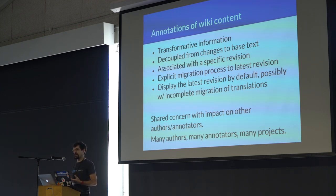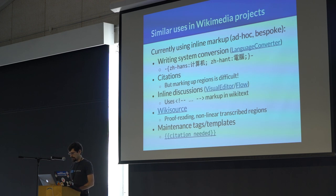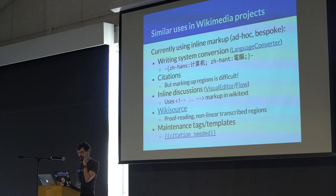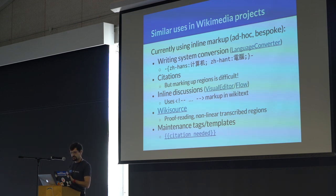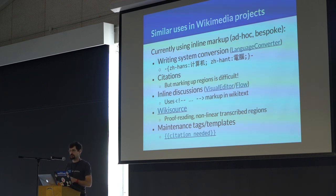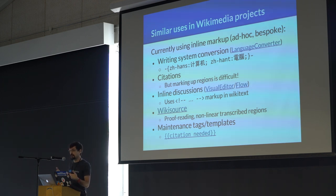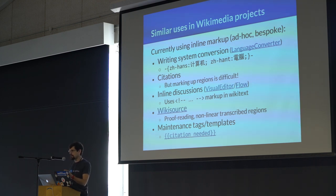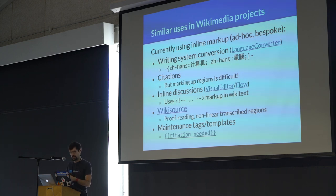There are also many different annotation projects — translation is just one instance. We have a system to convert between writing systems for certain Wikipedias, between Cyrillic and Latin scripts or between simplified and traditional Chinese, and we use inline annotations to mark exceptions to the automatic conversion process. We also obviously care a lot about citations in Wikipedia, but our citations currently are just footnotes — they mark a specific point in the text. What we would really like to do is mark the entire region that is supported by a specific citation.